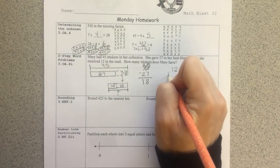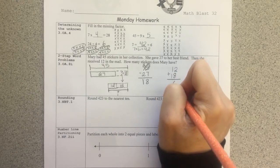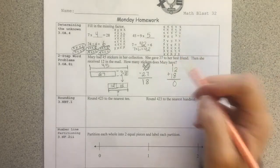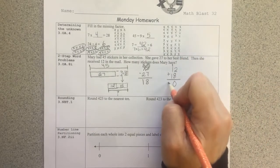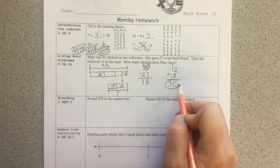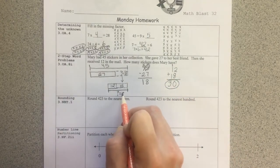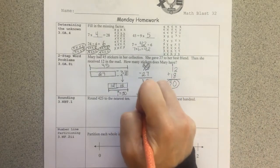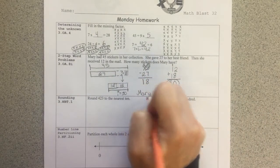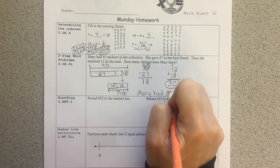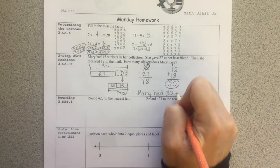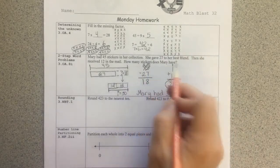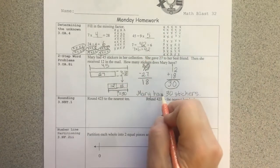That's an addition problem. I'm going to take 12 plus 18. 2 ones and 8 ones is 10 ones. That's zero ones. And the 10 ones can bundle to make a larger unit, a 10 here. 1 ten, 1 ten, and 1 ten is 3 tens. So 30 is the total here that she had left. So we can answer the question with a sentence. Mary has 30 stickers.